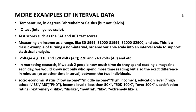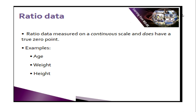For instance, high school is lower than a bachelor's degree. Now let's go to the last data type: ratio data. Ratio data has a true zero point.